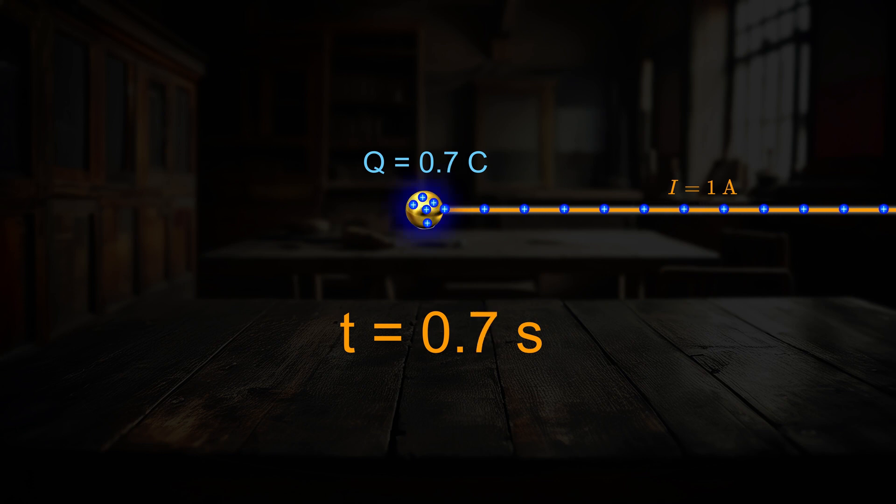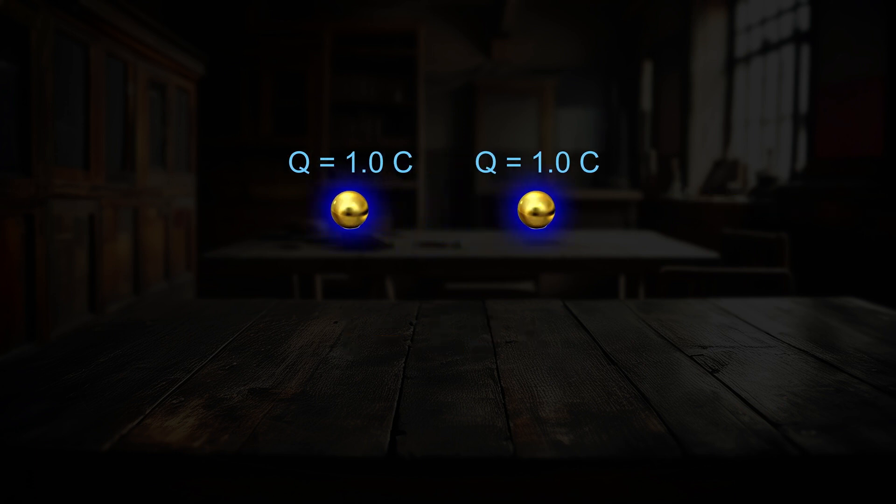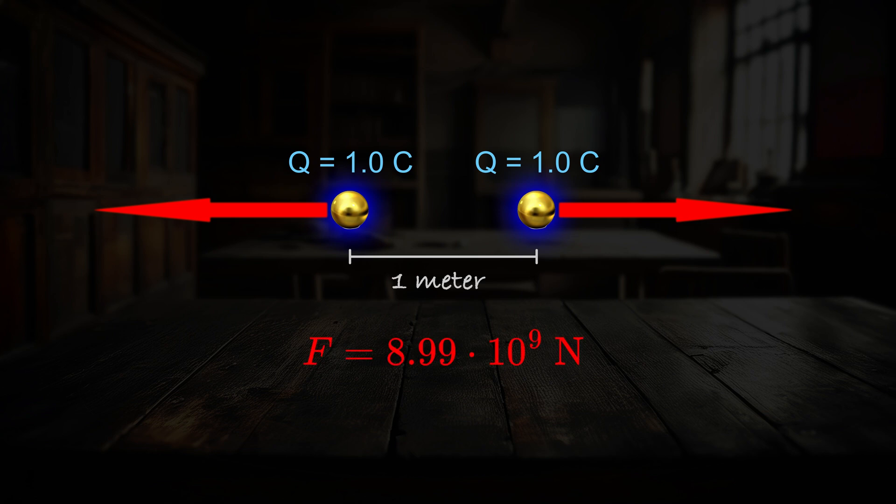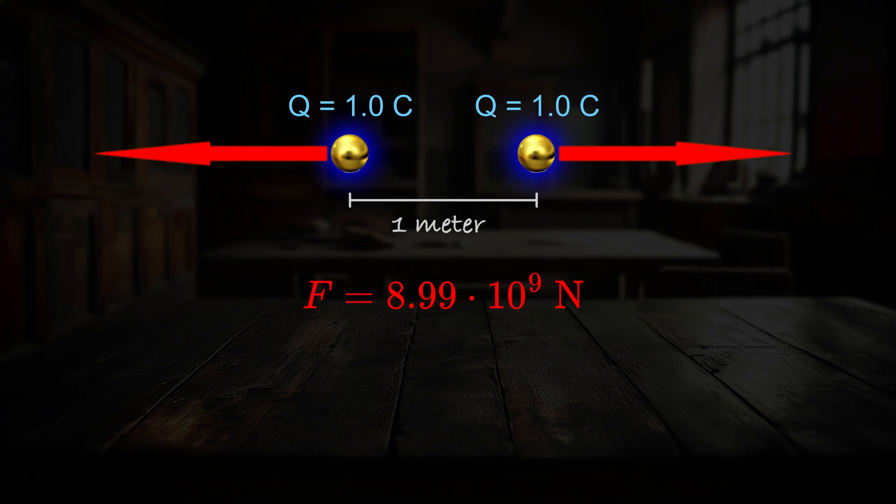So now the charge that accumulates over one second on a plate of capacitor charged by one ampere is a new unit of charge that we call Coulomb, and the units are ampere times second. Now if you take two bodies charged by one Coulomb and place them one meter apart, the force they will act on each other is almost 9 billion newtons. And therefore to make the equation for Coulomb's law correct, the constant itself has to have this value.